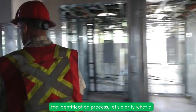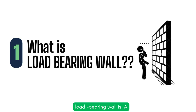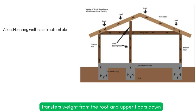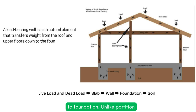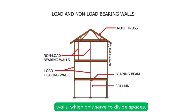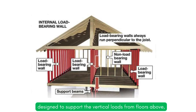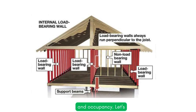Before we dive into the identification process, let's clarify what a load-bearing wall is. A load-bearing wall is a structural element that transfers weight from the roof and upper floors down to the foundation. Unlike partition walls, which only serve to divide spaces, load-bearing walls are integral to the building's framework. These walls are designed to support vertical loads from floors above, horizontal forces from wind or seismic activity, and even additional stress from furniture and occupancy.